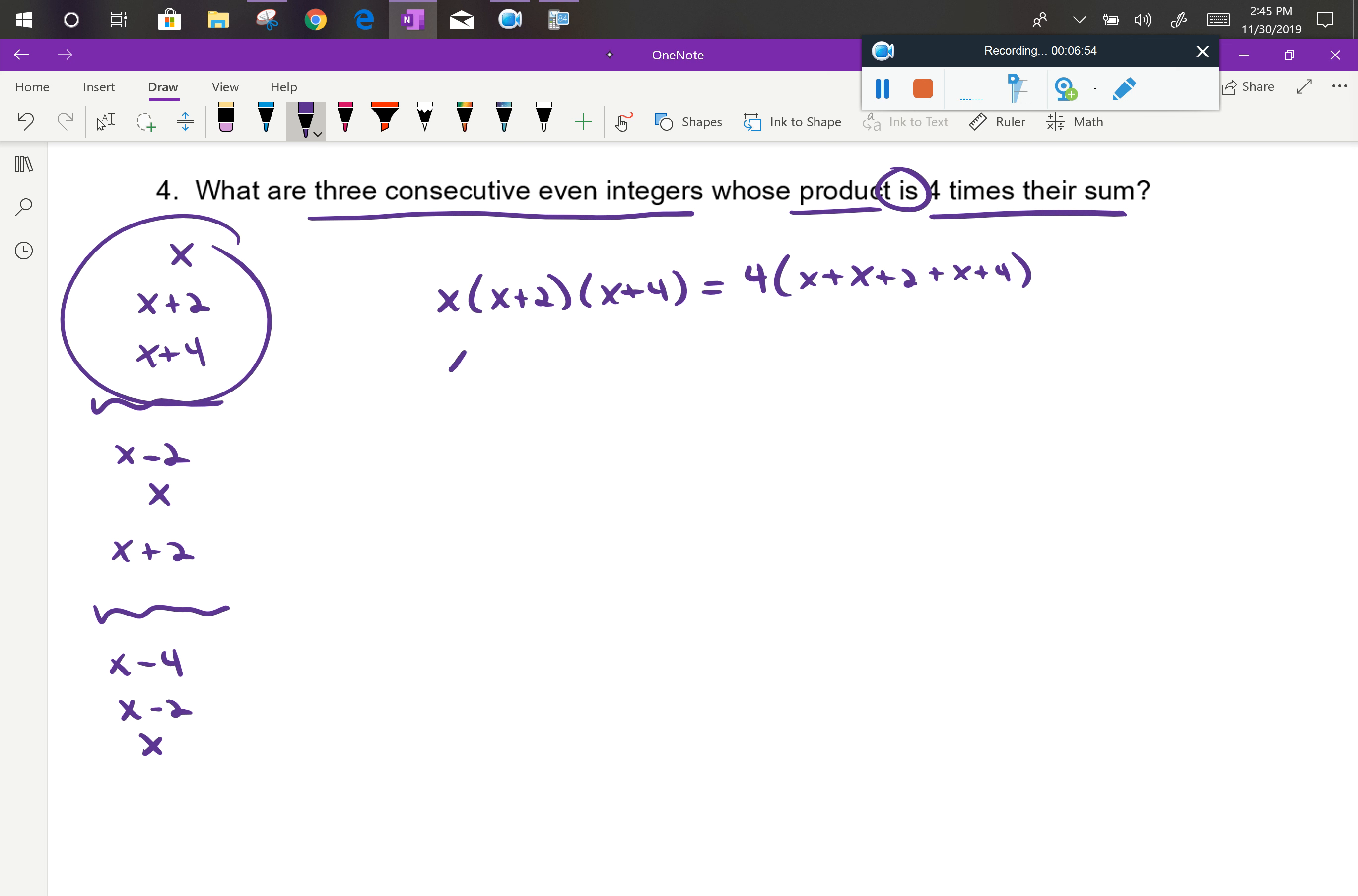If I multiply the binomials on the left, I've got x² + 6x + 8, and then if I distribute, I have x³ + 6x² + 8x. On the right-hand side, first I'd wanna find that sum. I've got three x's and six, and then I could distribute, so I have 12x + 24.